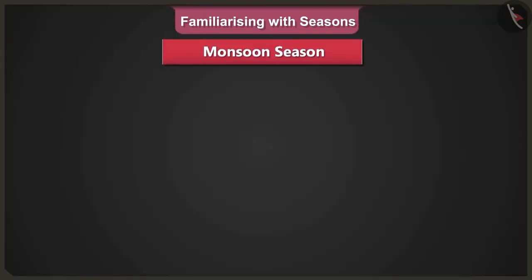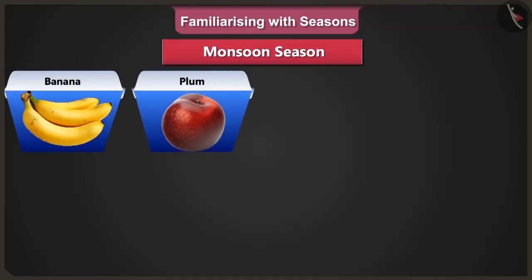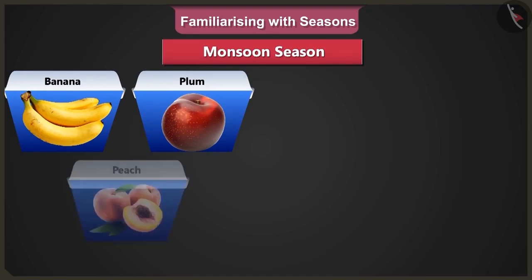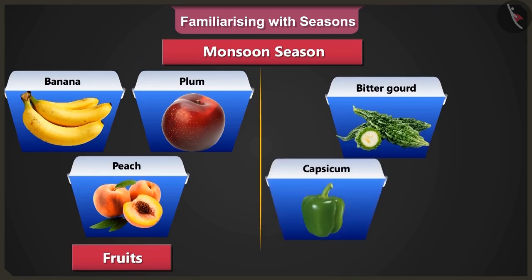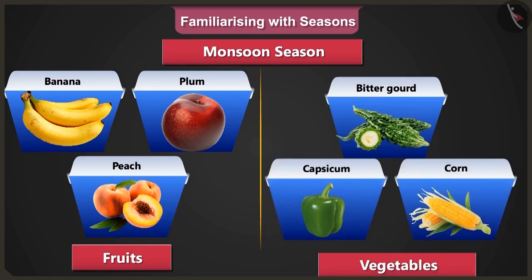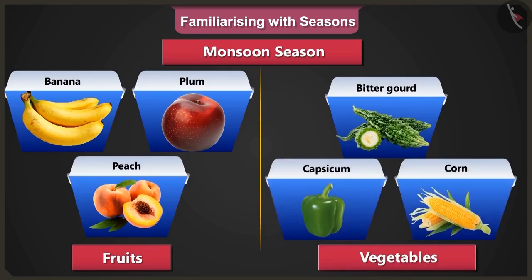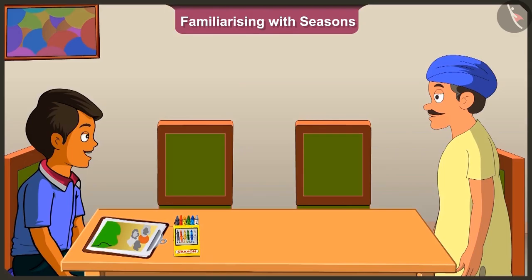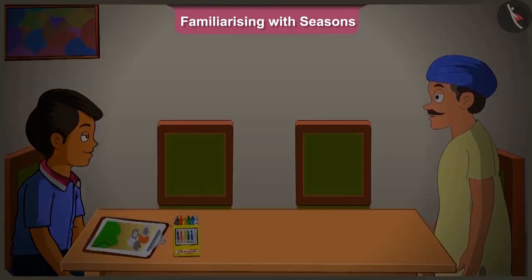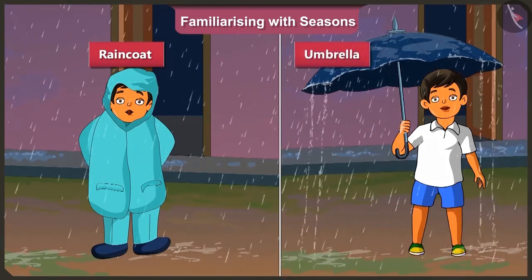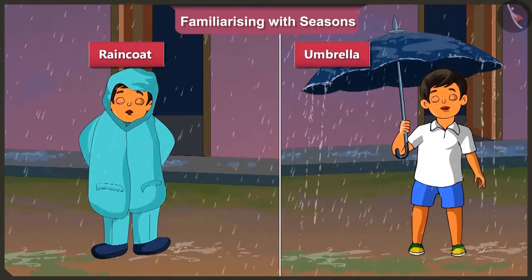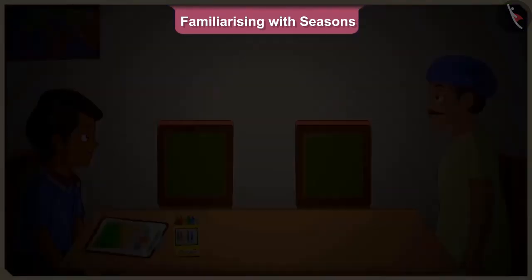In this season, bananas, plums, peaches are the fruits. Bitter gourd, capsicum, corn are the vegetables of this season. And yes, in this season, we use raincoats and umbrellas to avoid getting wet in the rain.